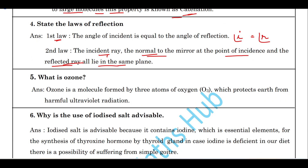What is ozone? Ozone is a molecule formed by three atoms of oxygen. Its function is to protect the Earth from harmful UV rays. Ozone is found with three atoms of oxygen.